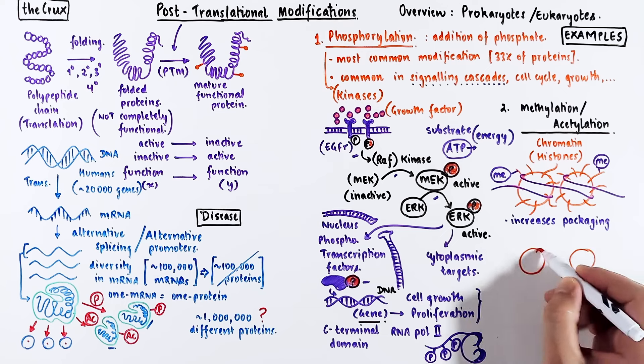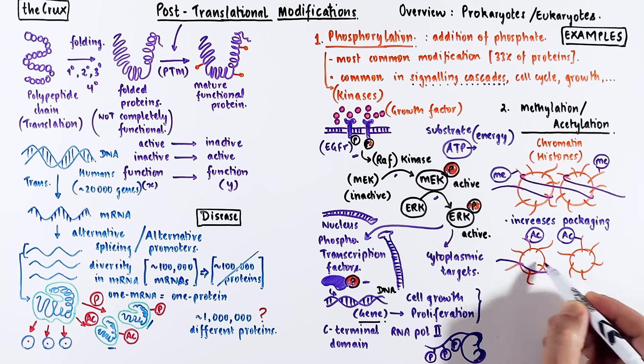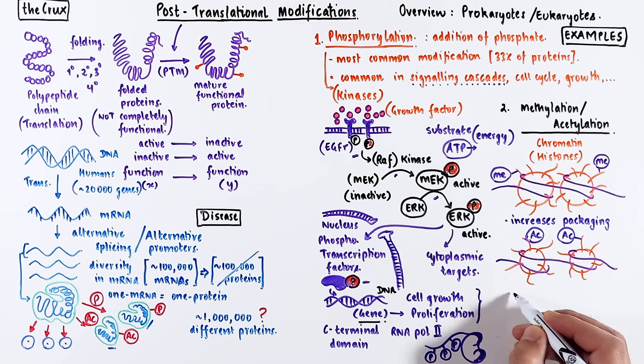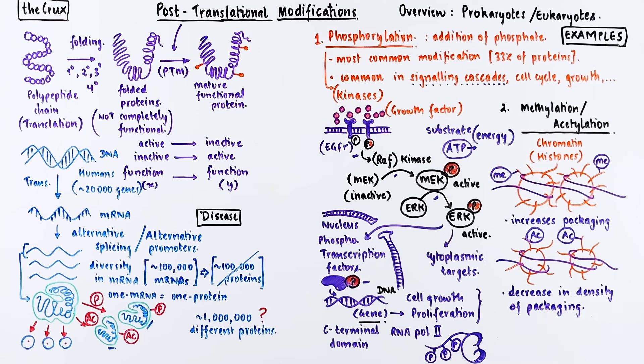On the other hand, if the same histones are acetylated, packaging density decreases and DNA becomes open and accessible. This is something we discussed in transcription regarding the problem of histones blocking transcription. These methylation and acetylation of histones can lead to different parts of chromatin being open and closed, which are either euchromatin or heterochromatin states.